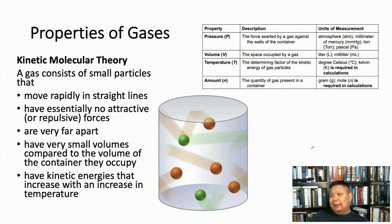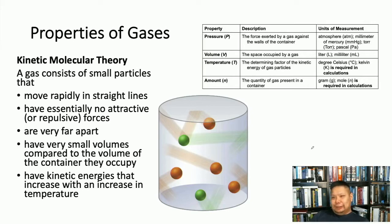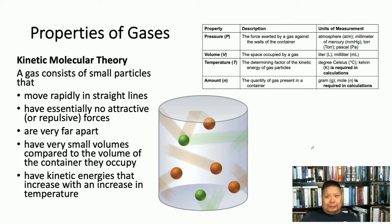If we had 100% oxygen in our atmosphere, that would be really bad because a lot of things would catch on fire. Oxygen is the fuel for fire — the slightest spark would cause an explosion. So it's a good thing that our atmosphere is mostly nitrogen.